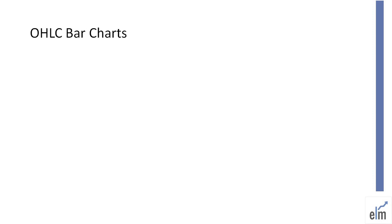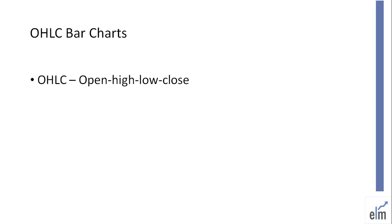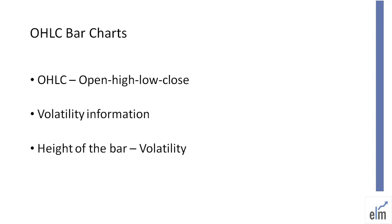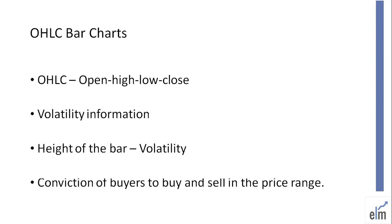The OHLC bar charts, which stands for Open High Low Close, provide volatile information that line charts lack. Chartists can evaluate the volatility by the height of the bars and the conviction of buyers and sellers by the price range between the open and close marks.